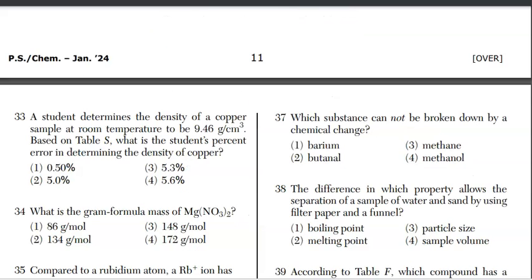Starting with question 33 here. We're talking about a percent error question. Reference table T has the percent error equation that you're going to need. And we're dealing with a student value of 9.46. You're even told to go to reference table S to find the actual value for the density of copper, which is 8.96.